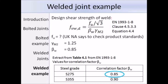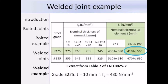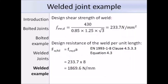From the extract of table 4.1, since we are using grade S275 steel, the correlation factor beta W equals 0.85. From the product standards, for grade S275 steel with a thickness between 3 and 100 mm, the ultimate tensile strength FU is 430 N/mm².